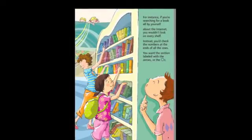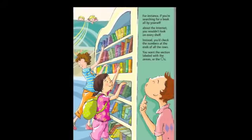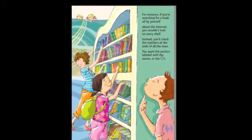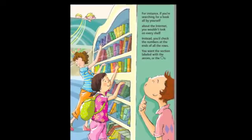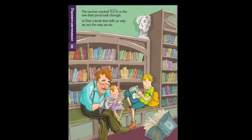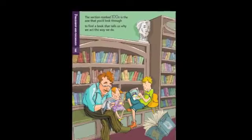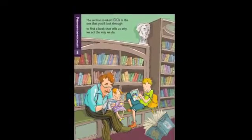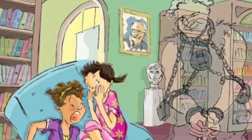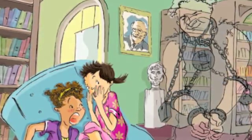For instance, if you're searching for a book about the internet, you wouldn't look on every shelf. Instead, you check the numbers at the ends of all the rows — you want the section labeled with the zeros. The section marked 100 is the one you'd look through to find a book that tells us why we act the way we do. It offers books explaining dreams and feelings, optical illusions, or places ghosts may dwell.